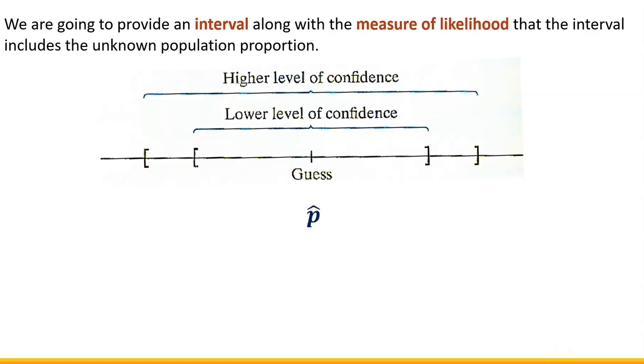And this is how we're gonna think about it. Our guess will be based on the sample proportion p hat. And then using that sample proportion we're gonna construct an interval. The wider that interval, the more confident we're gonna be that the true population proportion is in that interval. And the smaller the interval is, the less confident we can be that population proportion is in that interval.